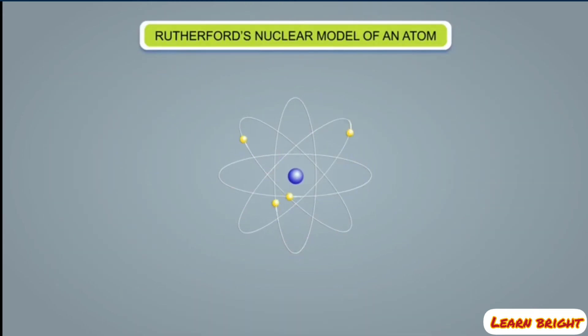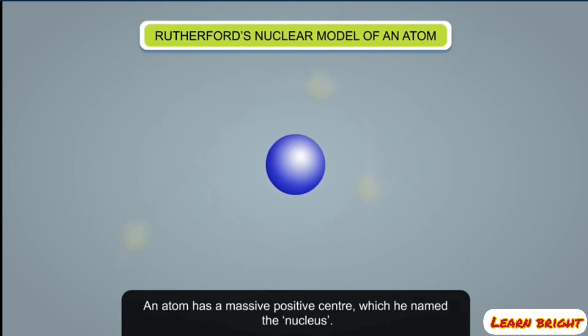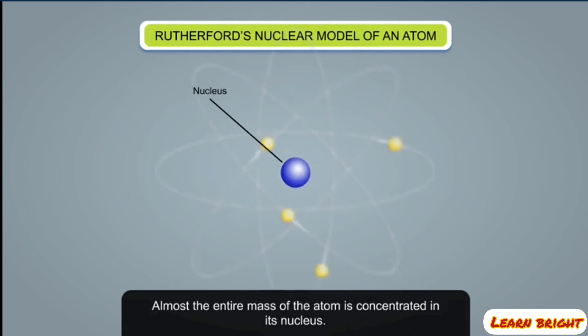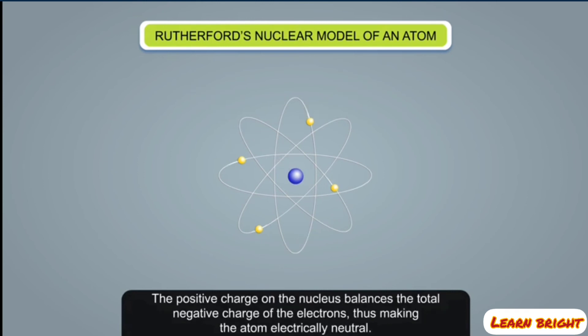On the basis of this experiment, Rutherford proposed the nuclear model of an atom: most of the space in an atom is empty; an atom has a massive positive center which he named the nucleus; almost the entire mass of the atom is concentrated in its nucleus; the negatively charged electrons revolve around the nucleus in circular orbits. The positive charge on the nucleus balances the total negative charge of the electrons, thus making the atom electrically neutral.